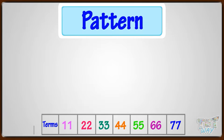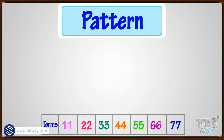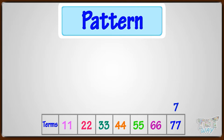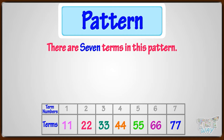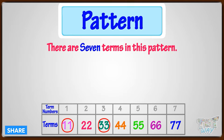Here is a pattern. How many terms are there in this pattern? Each number here is a different term. So here are 1, 2, 3, 4, 5, 6, 7 terms in this pattern. Let's give term numbers to the terms. We have given term numbers from 1 to 7 to each term. There are 7 terms in this pattern, where the term number of 11 is 1, term number of 33 is 3, and so on.